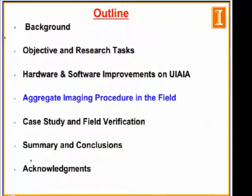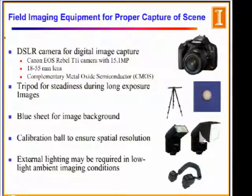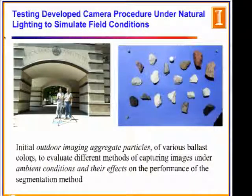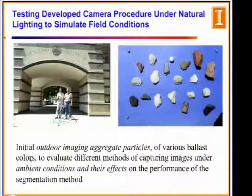In the field, you need a hardware package: a DSLR camera — we used a 15-megapixel camera with an 18 to 55 millimeter focal length — a tripod, a flashlight, a blue piece of paper, and a calibration box for calibrating the images. We have done some preliminary field results, taking samples of ballast, spreading them on a blue piece of paper, taking images with this camera, and then analyzing those images.